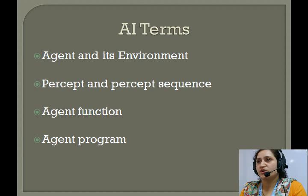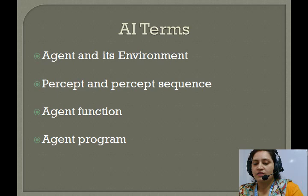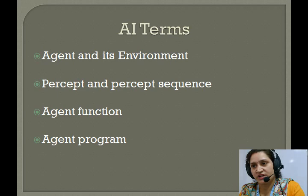Now we'll check out some terms which are very important when discussing AI. The first one is agent and environment, percept and percept sequence, agent function, and agent program. An agent is anything that can perceive its environment through sensors and act upon the environment through effectors. We have certain agents like human agent, robotic agent, and software agents.